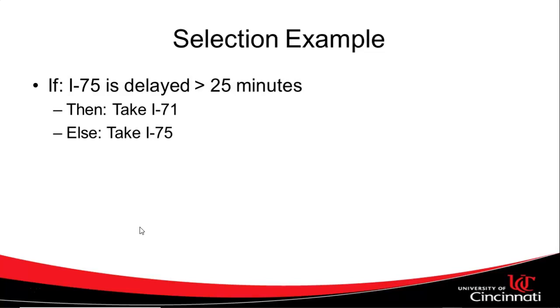Why the 25 minute threshold? Well, you figure if you're downtown and you need to get to Springdale, where 75 and 275 come together, it would take maybe 22 minutes in a normal day. But if you take 71 and 275, it might take 35 minutes. So if there's a wreck on 75, then it justifies going 71 to 275. But only if 75 is delayed by 25 minutes or more. So that's a good example of selection.